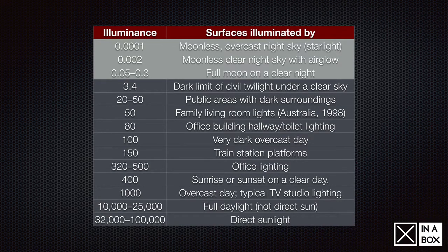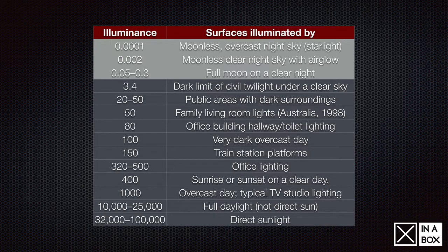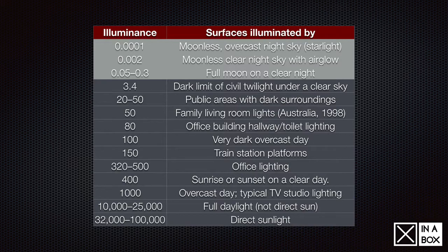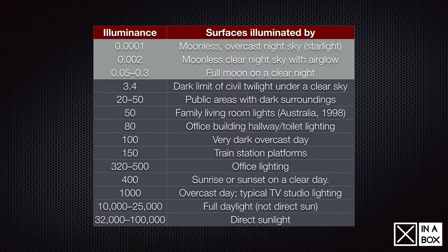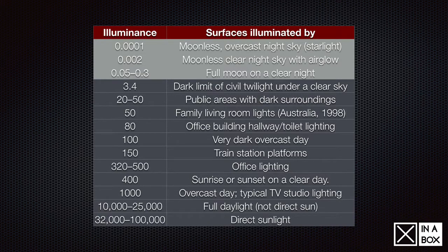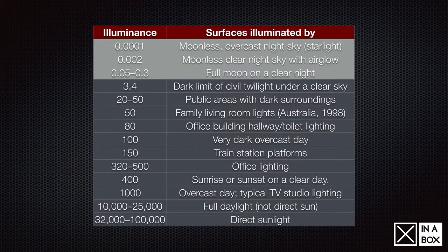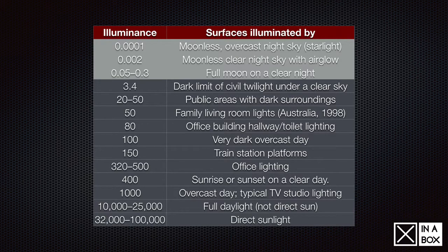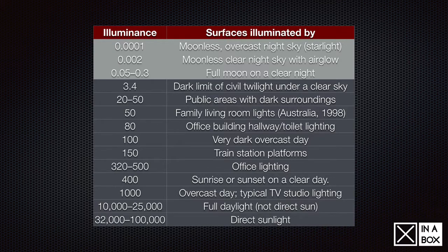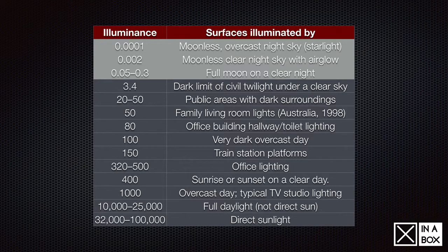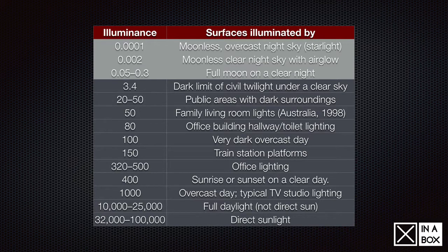Let's look at how that is reflected in a table like this one here. This is from Wikipedia. If you Google illuminance on Wikipedia, you can see here that we start here with moonless overcast night sky, starlight. What is the light there? And we can't measure that. Those things in light gray up there can't be measured. We can only measure from dark limit of the civil twilight under a clear sky. It refers here to family living room in Australia in 1998. We go down to the bottom. We can see here in full daylight, not direct sun is 10 to 25,000. And direct sunlight is up to 100,000. And the sensor measures up to 220,000 lux. So, it's going to be interesting when it gets into space. How much light there is when it's illuminated directly from the sun.